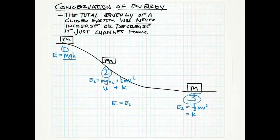So the block started off with potential energy, lost some of that at point two as it became kinetic, and then at the bottom it's all kinetic energy. The conservation of energy says that the energy at one equals the energy at two equals the energy at three. What's going to start to happen with the problems we do in class is that we're going to bring back everything we've been doing so far and throw energy on top of that. In my opinion, energy helps explain things better, and as the videos progress we'll be more descriptive about that.